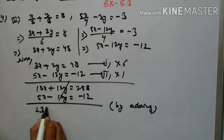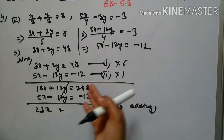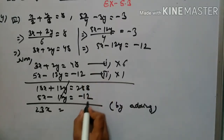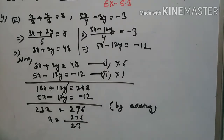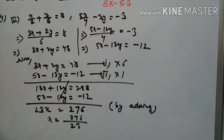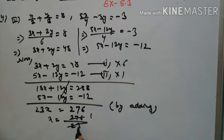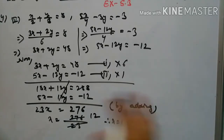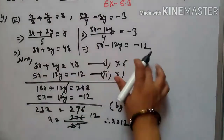Adding the equations: 18 + 5 = 23, so 23x = 288 - 12 = 276. Therefore x = 276 ÷ 23 = 12. Now we find y by substituting x = 12 into equation 1.